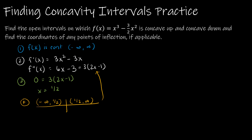We take intervals negative infinity to one half and one half to positive infinity, then choose test points. Plugging in zero gives negative 1 times 3 equals negative 3, which is negative. Plugging in 1 gives 2 minus 1 equals 1, times 3 equals 3, which is positive. To find the actual point, I plug x equals one half back into the original function: one half cubed minus three halves times one half squared gives one eighth minus three eighths, which is negative two eighths, or negative one fourth.